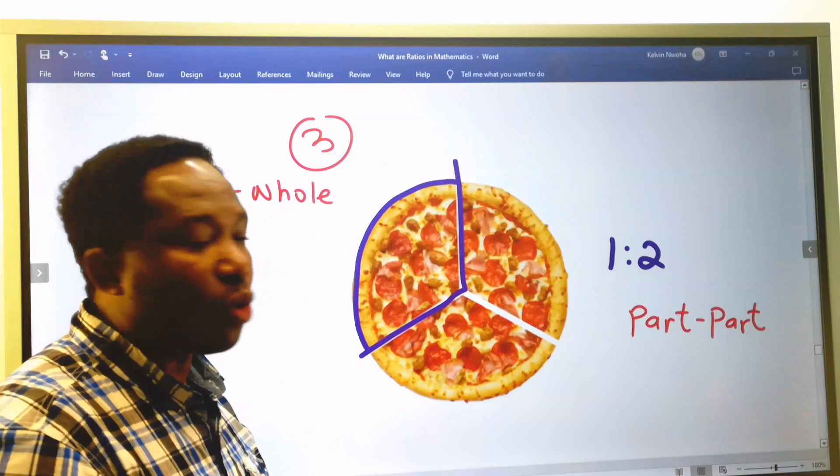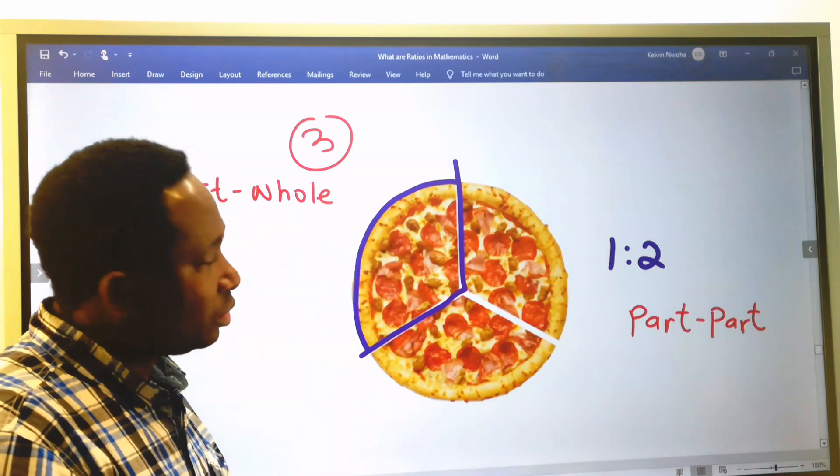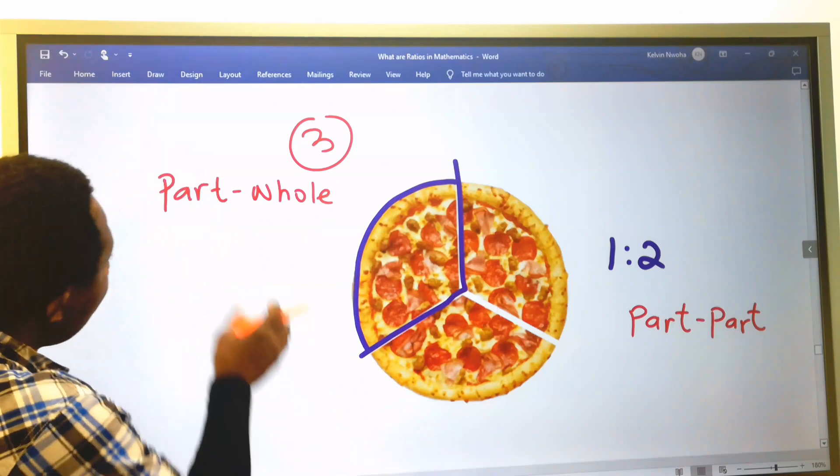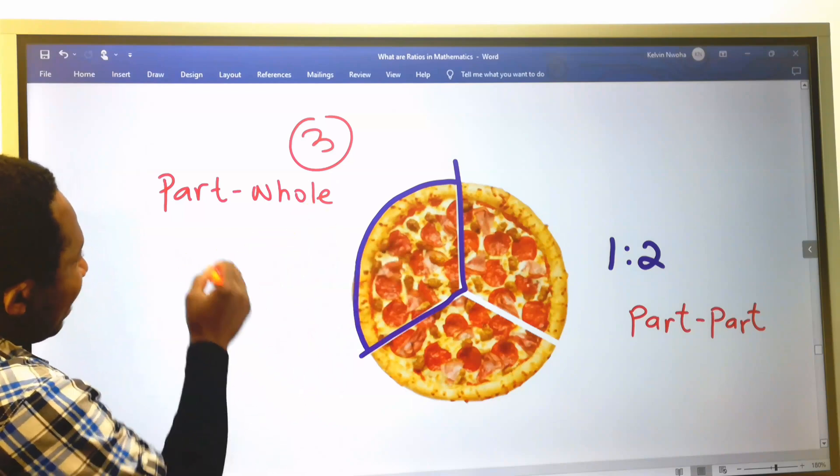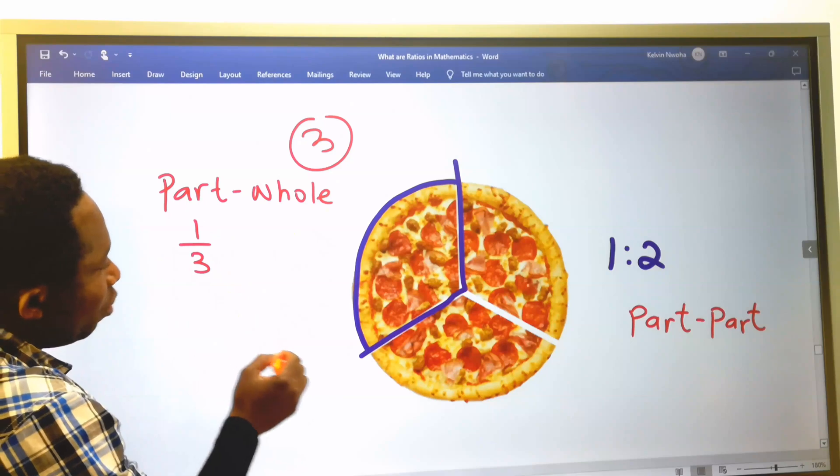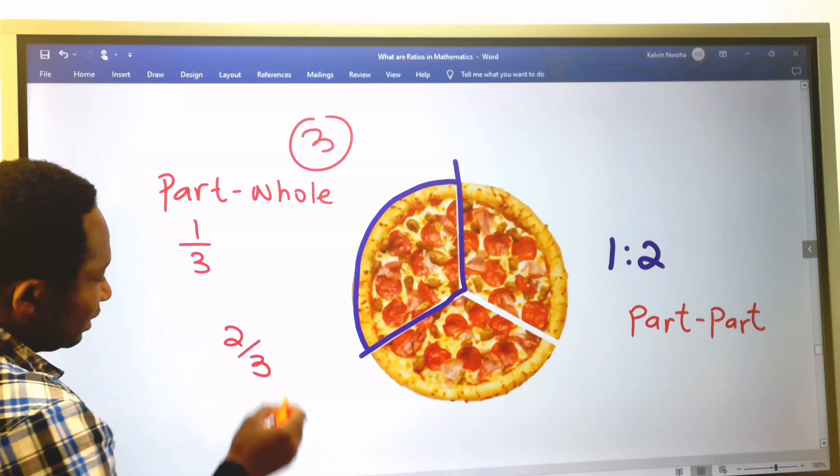But if I want to compare this removed part of the pizza to the entire fraction, that will become part to whole. This removed pizza part becomes 1 over 3, while the remaining part of the pizza becomes 2 over 3.